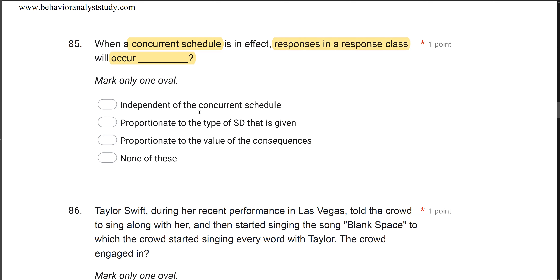Answer B — proportionate to the type of SD given — is wrong; responses aren't proportionate to antecedents. Responses in a response class are proportionate to the consequences. For example, if you get reinforced every five responses on Schedule 1 and every two responses on Schedule 2, your responses will be proportionate to that amount of reinforcement. When a concurrent schedule is in effect, responses in a response class occur proportionate to the value of the consequences.